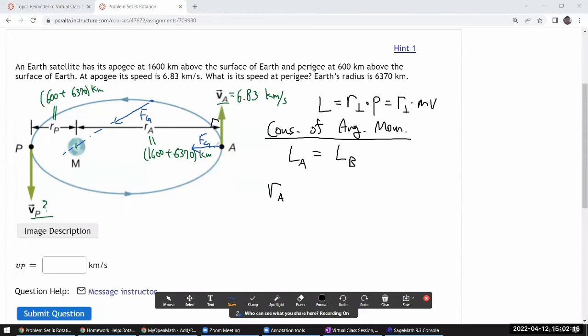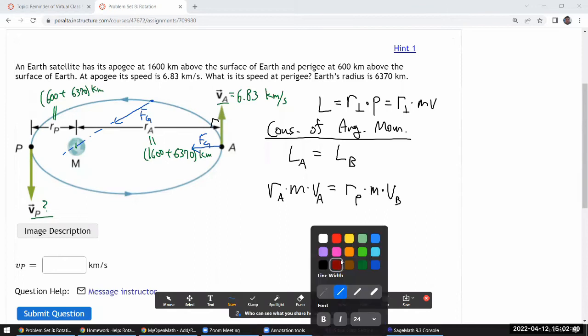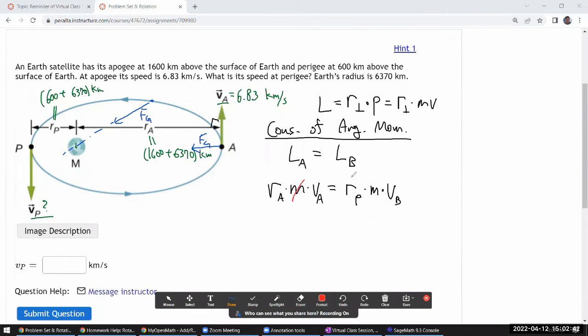So at point A we have the apogee distance ra. With the apogee and perigee, this distance works out to be the perpendicular distance. All the other points along the orbit it gets a little complicated, which is why we use apogee and perigee. Perpendicular, I can just use that as my lever arm times m times velocity at A, speed at apogee, is equal to the perigee distance rp times m times the speed at perigee.